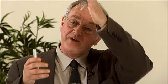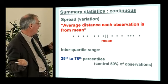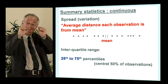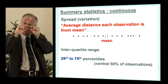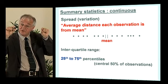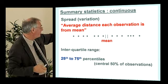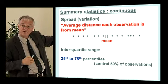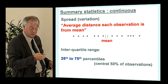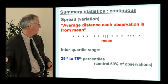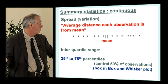Going back to the box and whisker plot: the black line in the middle is the median — the 50th percentile. The box represents the 25th to the 75th percentile, the middle 50% of the observations. That's the box and whisker plot explained.